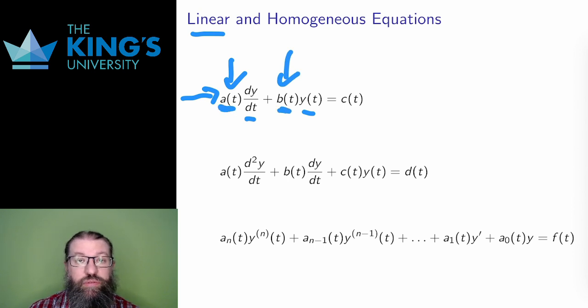a of t and b of t are the coefficient functions. There's also a coefficient without y or its derivatives, and that's written c of t here. All of these pieces are added together to form a linear differential equation. It's convenient to write the c of t alone on the right and everything else on the left.